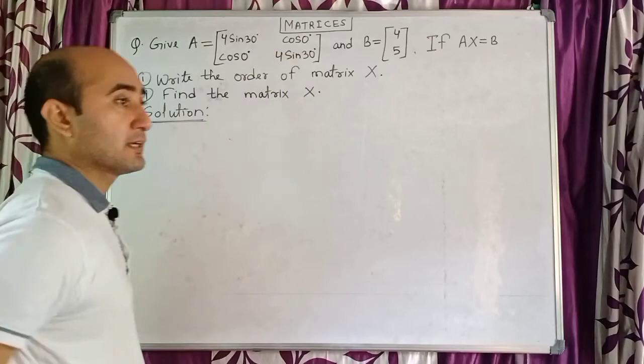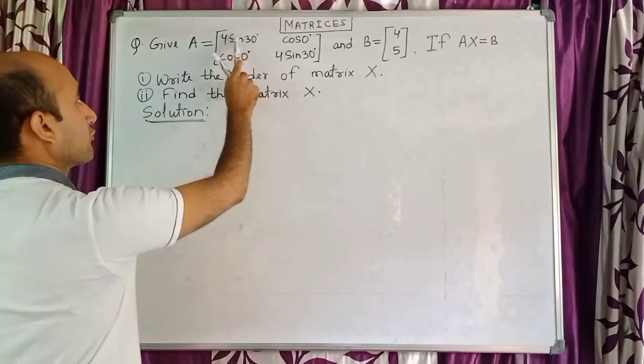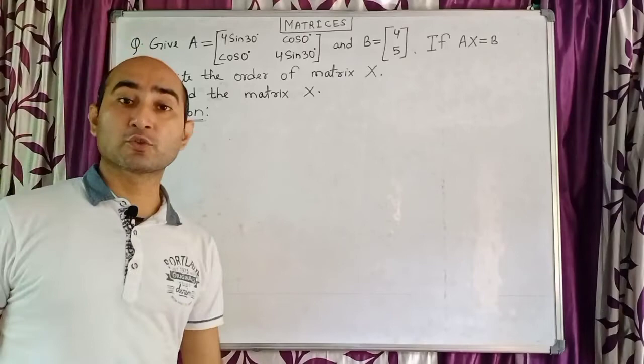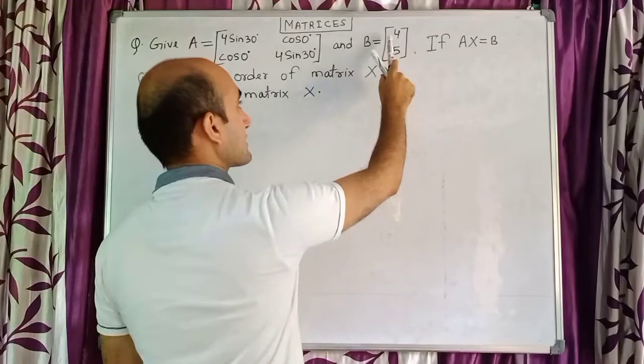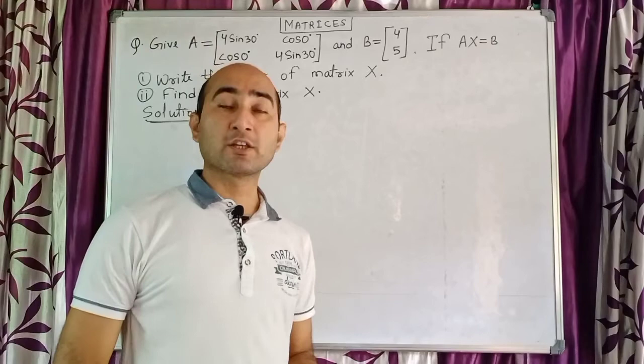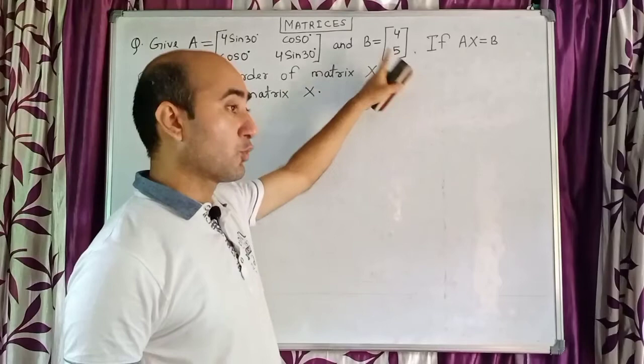Matrix A has four elements — 1, 2, 3, 4 — arranged in two rows and two columns, so it is called a 2×2 matrix, or the order of matrix A is 2×2. Matrix B is given as 4 and 5 — two rows but only one column — so matrix B is a 2×1 matrix.